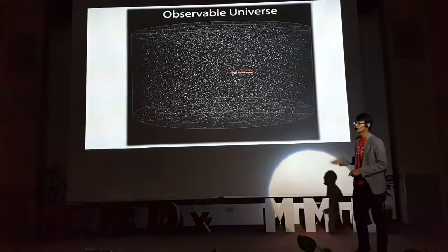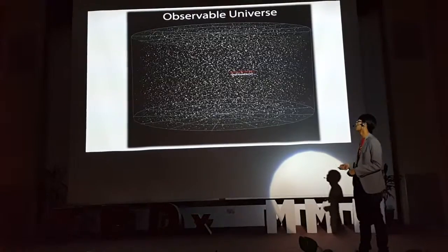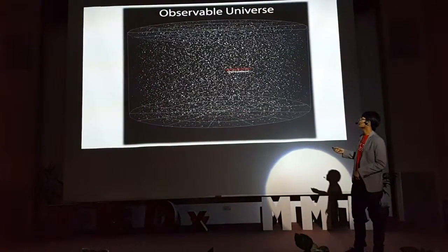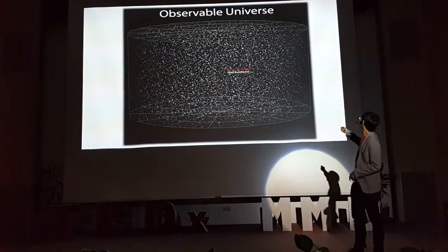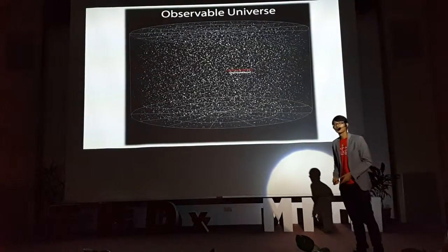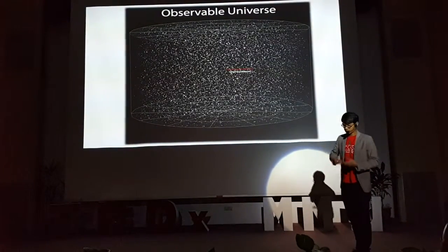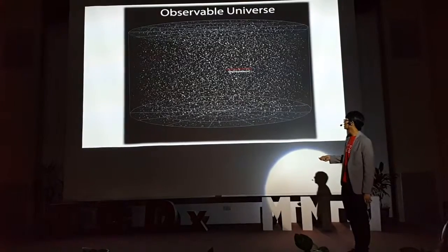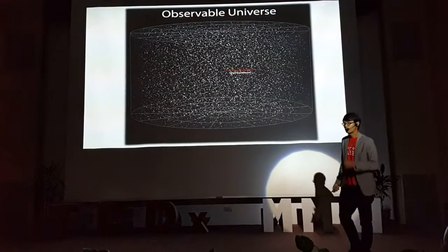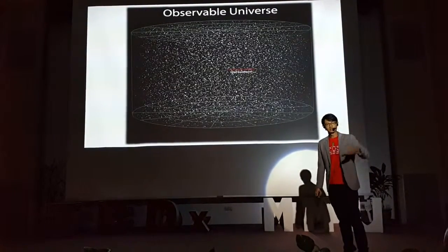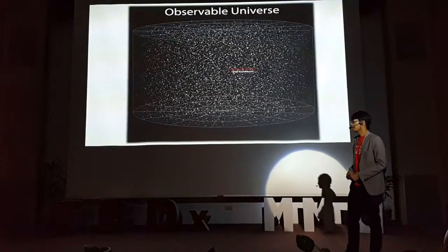We call it the observable universe because beyond a certain point, light and other signals from beyond its boundaries have not yet had time to reach the Earth. So we don't really know what's on the other side of that curtain of the unknown that prevents us from seeing further than that.